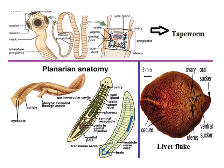Planarian anatomy shows the flatworm having a pharynx, gastrovascular cavity, auricles, and eye spots. It also has ovary, glands, testis, sperm duct, pharynx, seminal receptacle, and genital pore. The liver fluke is three millimeters in size, having an oral sucker, ovaries, ventral sucker, uterus, and cecum.